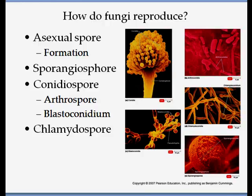Fungi reproduce asexually by forming spores called sporangiospores. The first type is conidia, which are produced in chains at the end of a conidiophore. Another type, arthroconidia, are formed by fragmentation from a septum. One species can produce the conidia shown in these pictures.